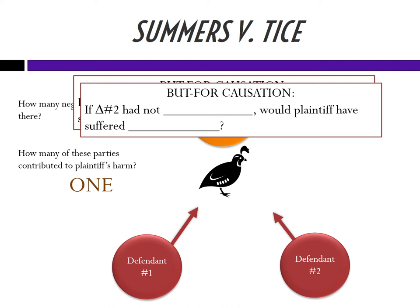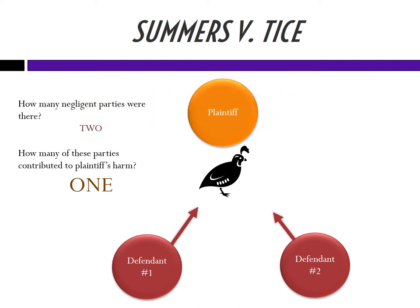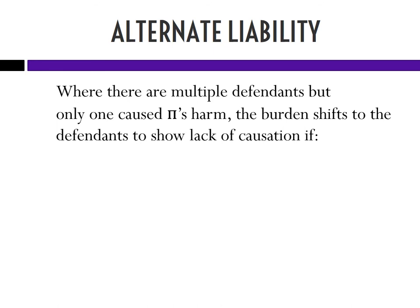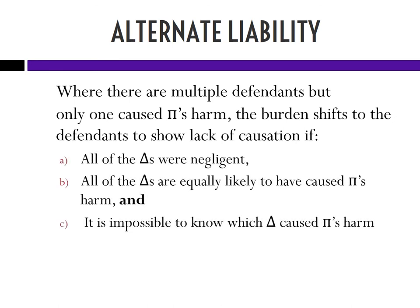So do we just let them off the hook? No — this is tort law. We come up with an exception. Where there are multiple defendants but only one that caused the plaintiff's harm, the burden shifts to the defendants to show lack of causation, if three things are true: first, all defendants were negligent; second, all defendants are equally likely to have caused plaintiff's harm; and third, it's impossible to know which defendant caused the plaintiff's harm. At the time of this case you just couldn't use forensic evidence to figure out which gun fired the buckshot.